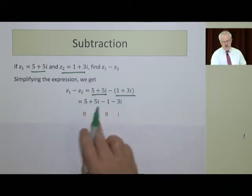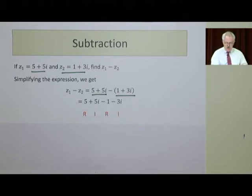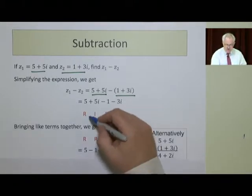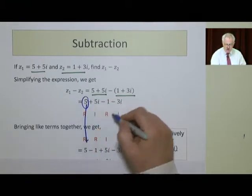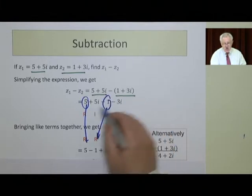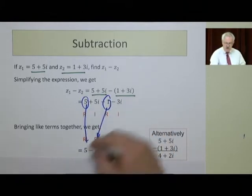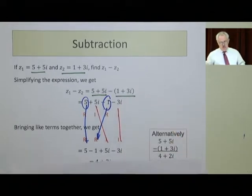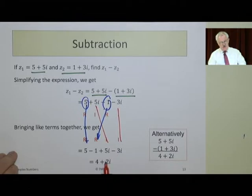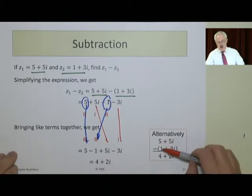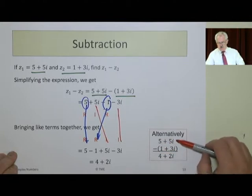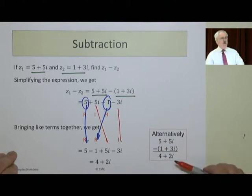Again, we've got the problem with some of these being real and some imaginary. So we group the reals together, watching the sign, and the imaginaries go the other side. Grouping them together, 5 minus 1 is 4 and 5i minus 3i is 2i. Or we could have done it here, written the top one and then the bottom: 5 minus 1 is 4, 5i minus 3i is 2i.